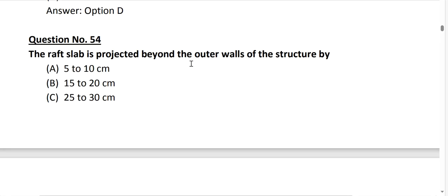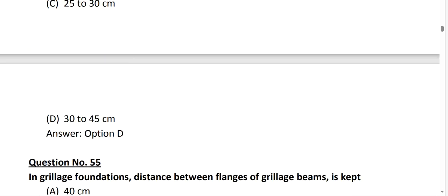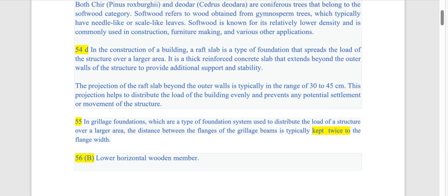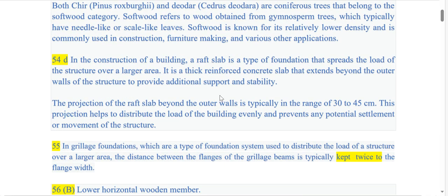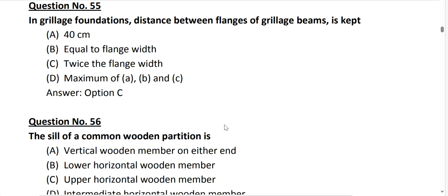Cedar and Deodar are coniferous trees that belong to the softwood category. Softwood refers to wood which typically has needle-like or scale-like leaves. Softwood is known for its relatively lower density and is generally used in construction, making, and various applications. Question number 54, the raft slab projects beyond the outer walls of the structure. Here option D is correct, by 30 to 45 centimeter.